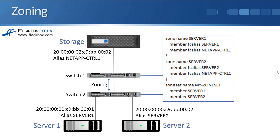When you configure this on your switches, because Fibre Channel is so automated and replicates everything, it's usually possible to just configure this on one switch. We could configure it on switch one, for example, and the config will be automatically replicated down to switch two as well. This depends on how you've set up your switches, but it's usually possible.